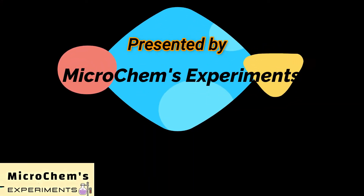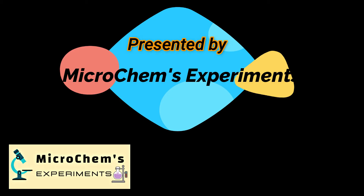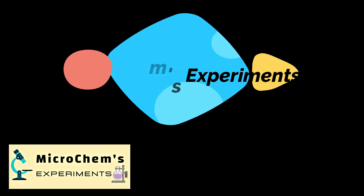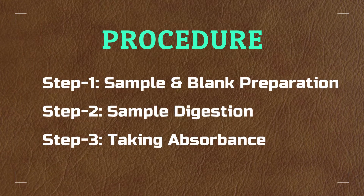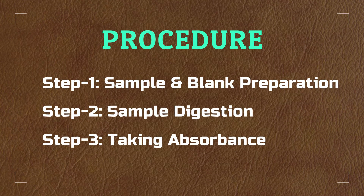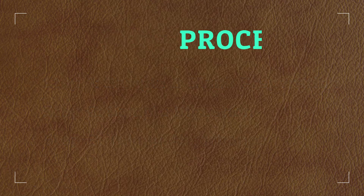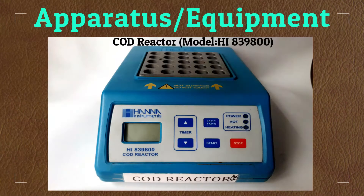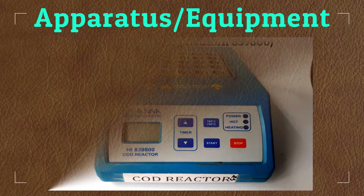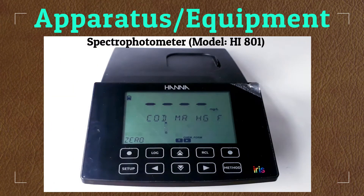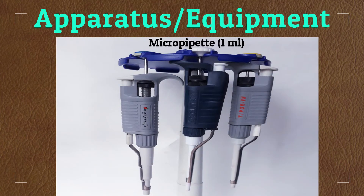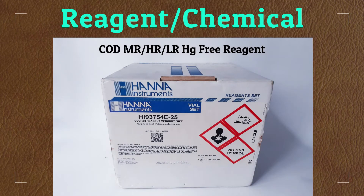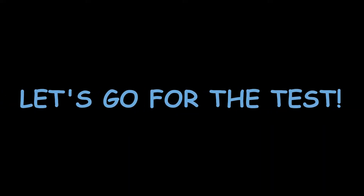Dear viewers, if you are new to this channel, welcome — be with us, be a scientist. The test involves only three steps: sample and blank preparation, sample digestion, and taking absorbance. To conduct the test, you will need a COD reactor heater to digest the sample, a spectrophotometer to which the method and calculation is preset, a micropipette of one milliliter, and COD reagent vials of different ranges.